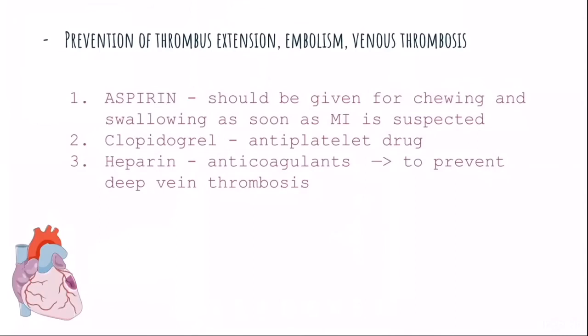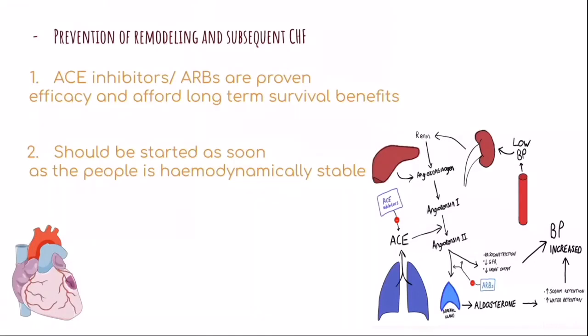For prevention of thrombus extension, embolism, and venous thrombosis, aspirin, clopidogrel, and heparin are given. Aspirin should be given for chewing and swallowing as soon as MI is suspected. Clopidogrel is an antiplatelet drug. Heparin is an anticoagulant given to prevent deep vein thrombosis.